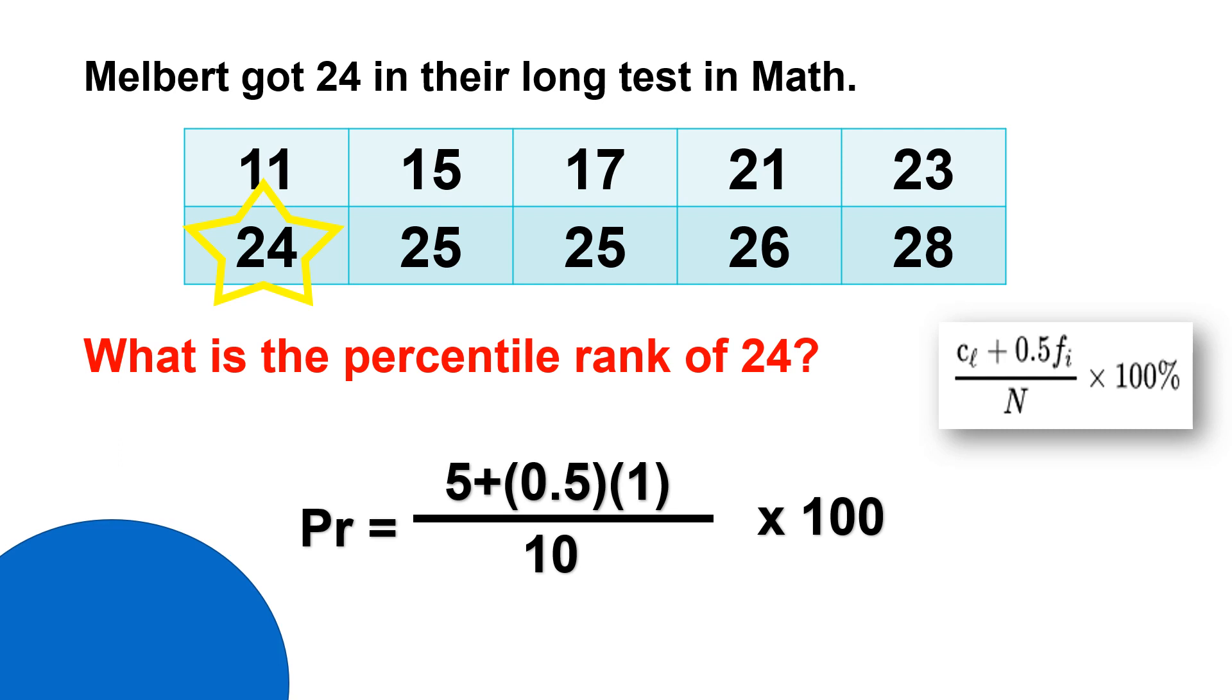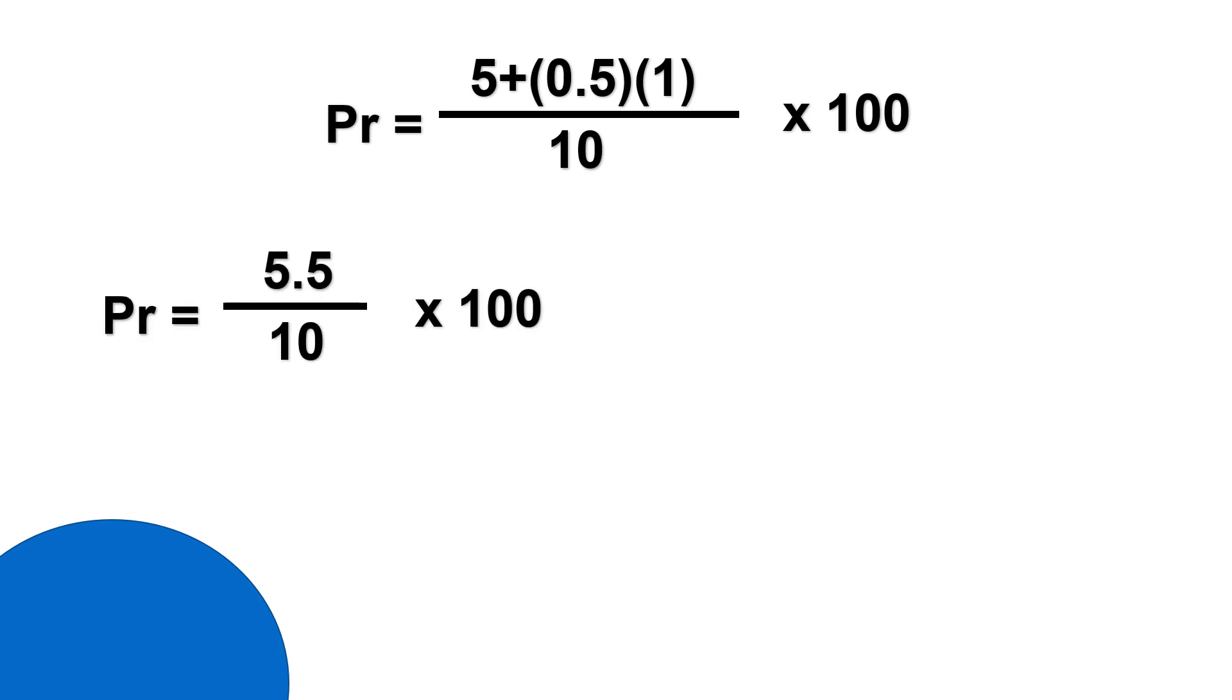So, you have 5, plus 0.5, times 1, divided by 10, times 100%. Let's solve. So, first 0.5 times 1, that will give us 0.5, plus 5, that becomes 5.5.